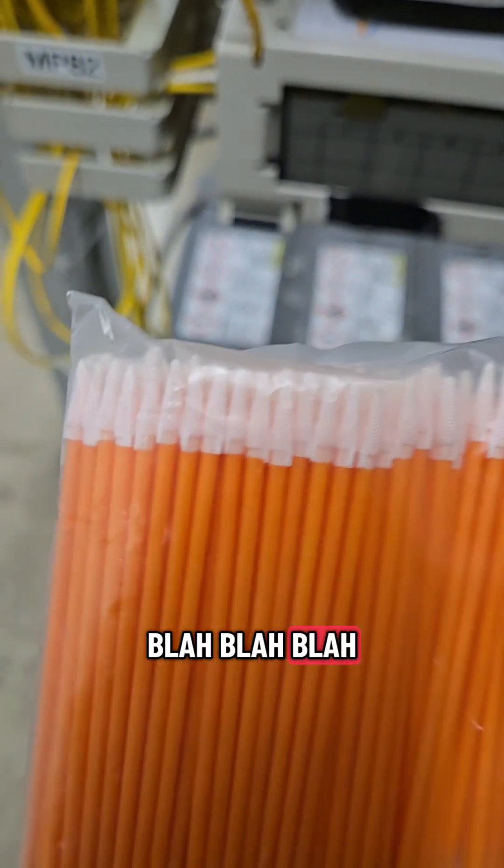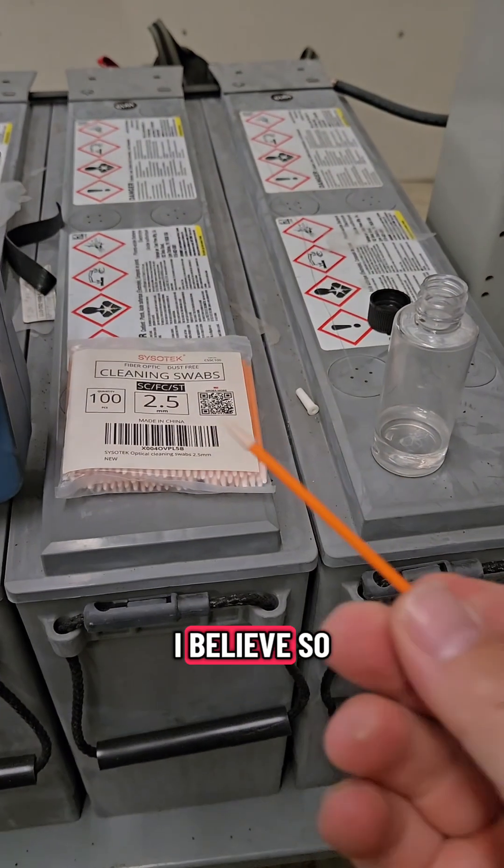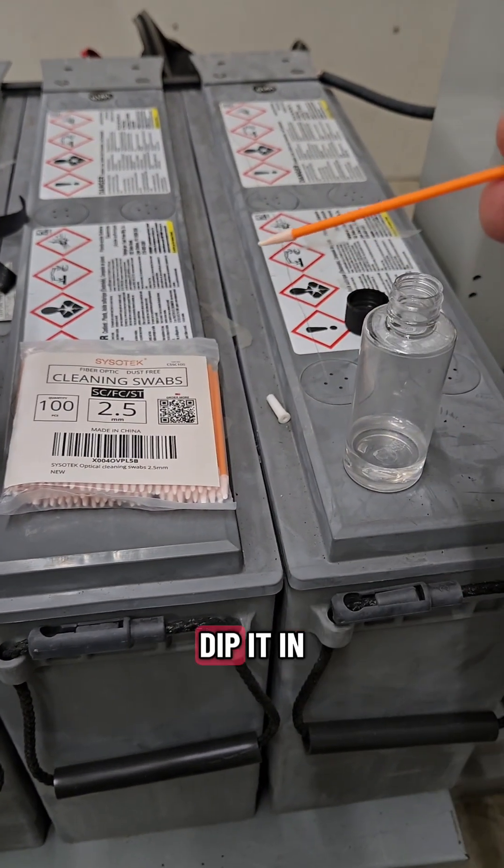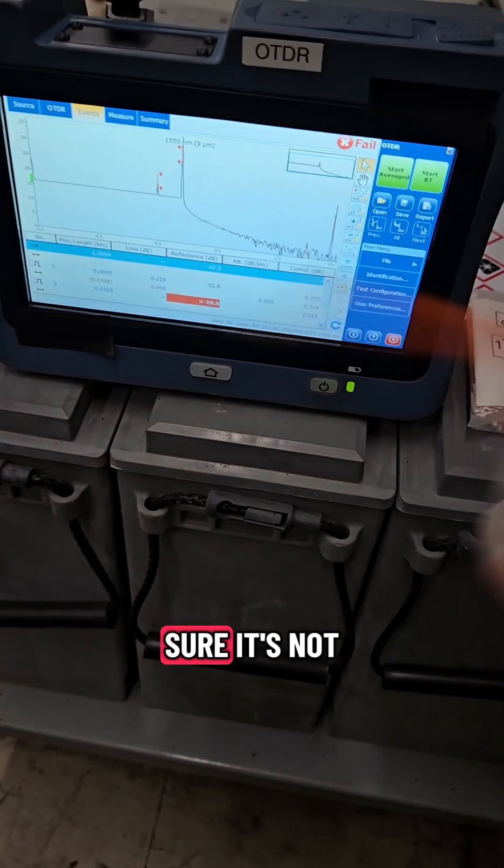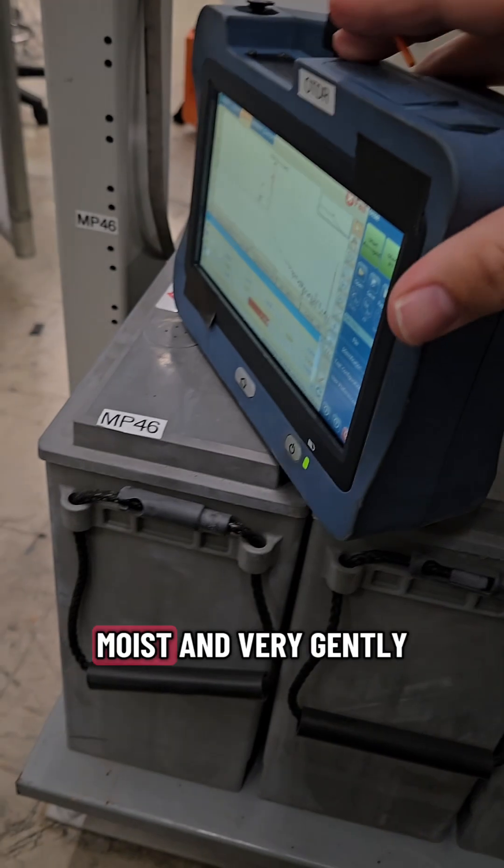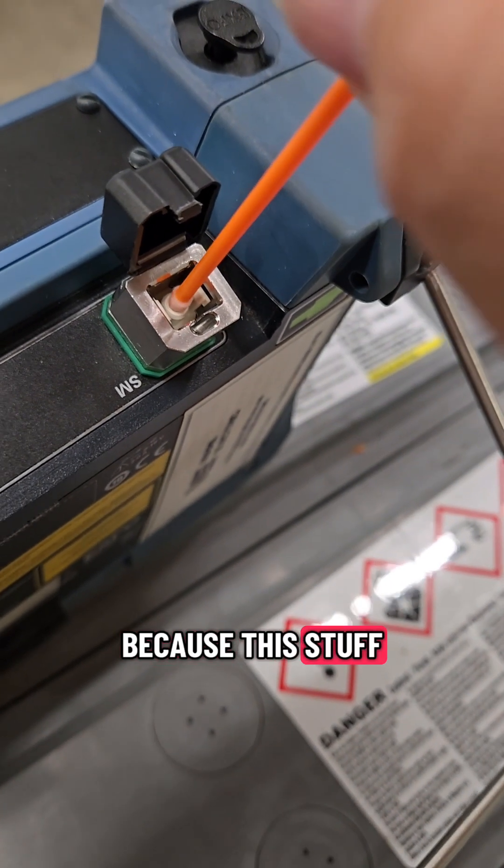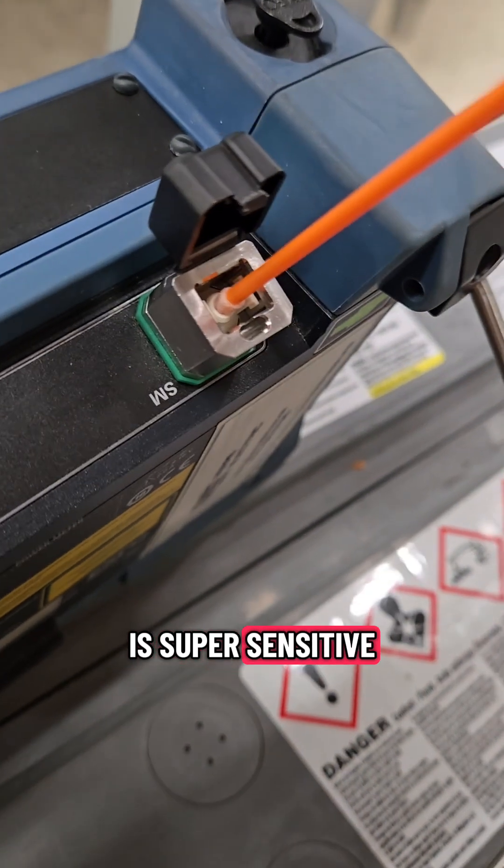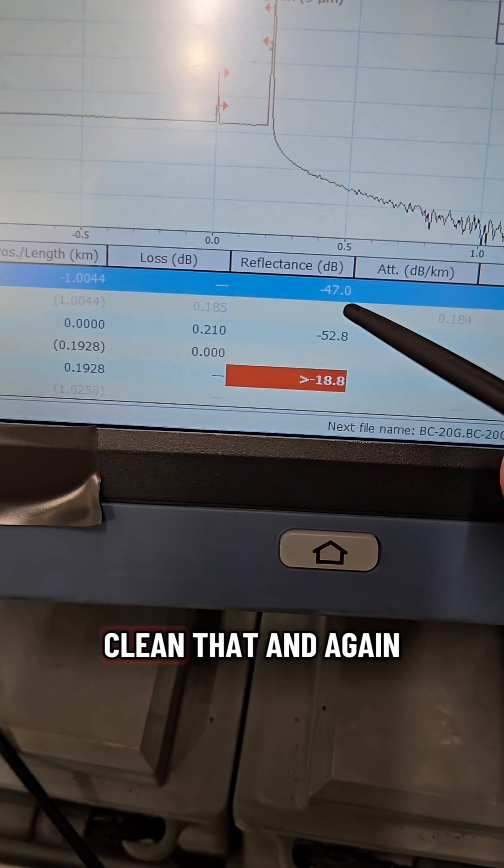So how this works: gonna dip it in a little bit of rubbing alcohol, I'm gonna make sure it's not dripping wet, just need it moist. And very gently, because this stuff is super sensitive and super expensive, so gently gonna clean that.